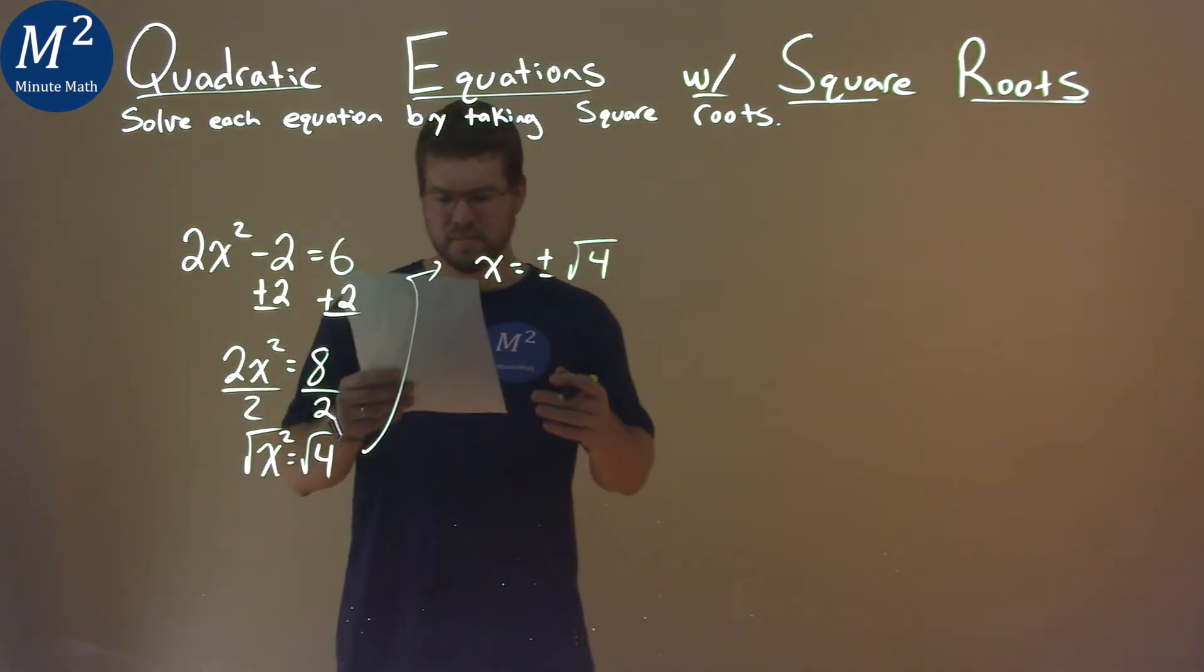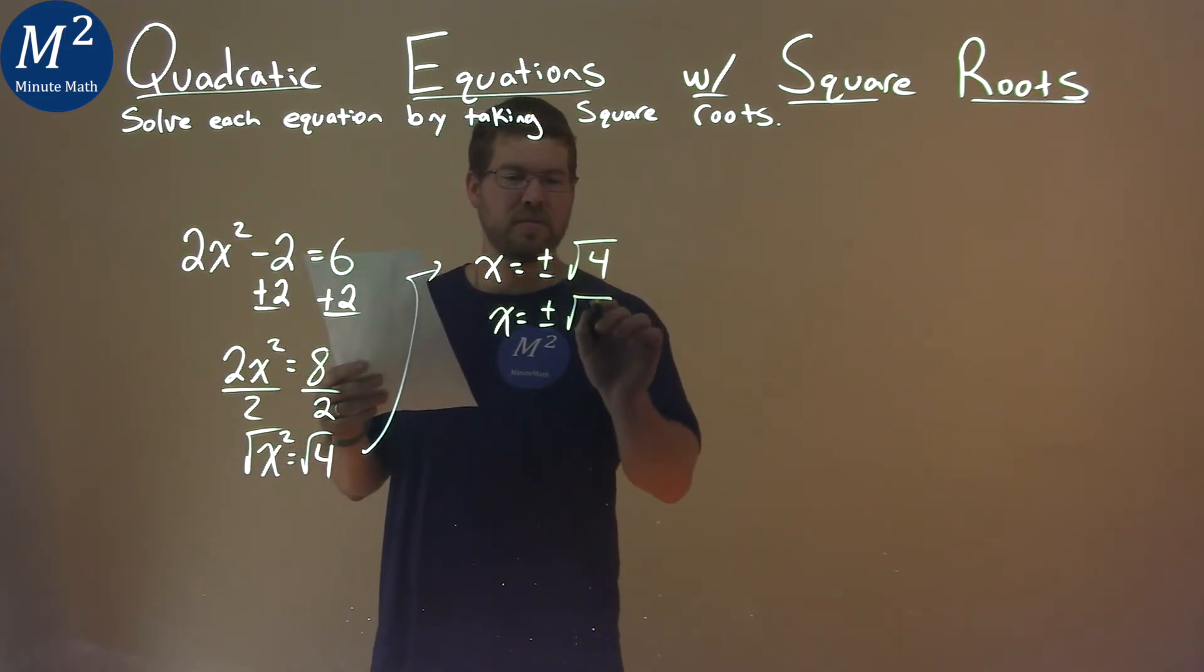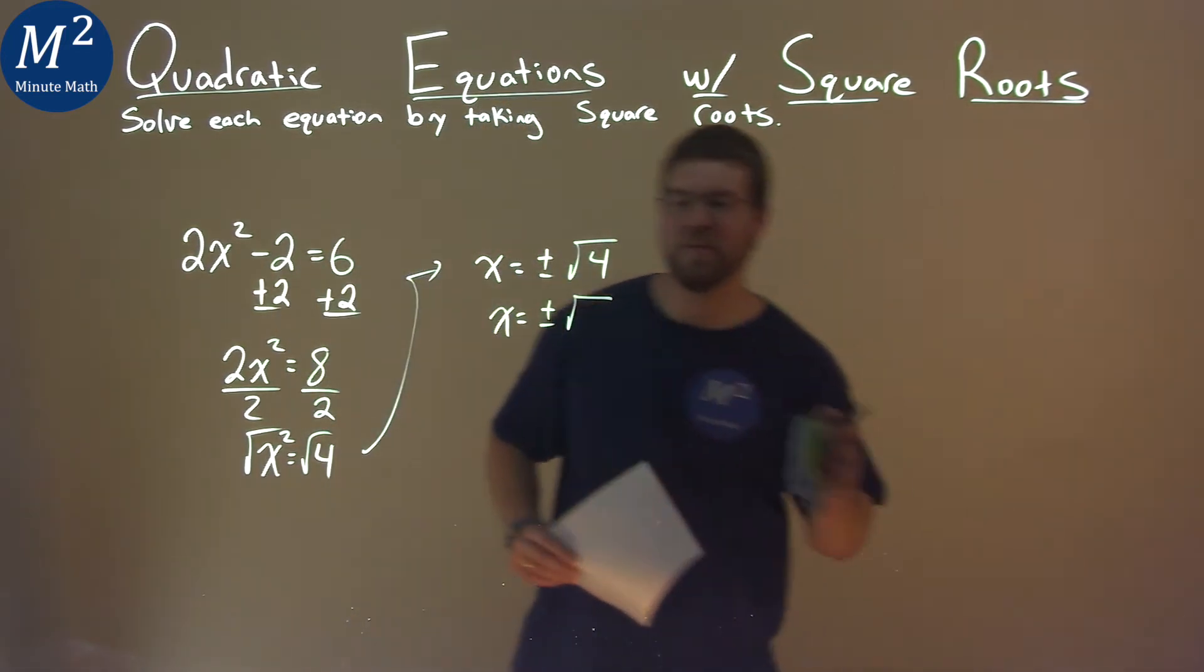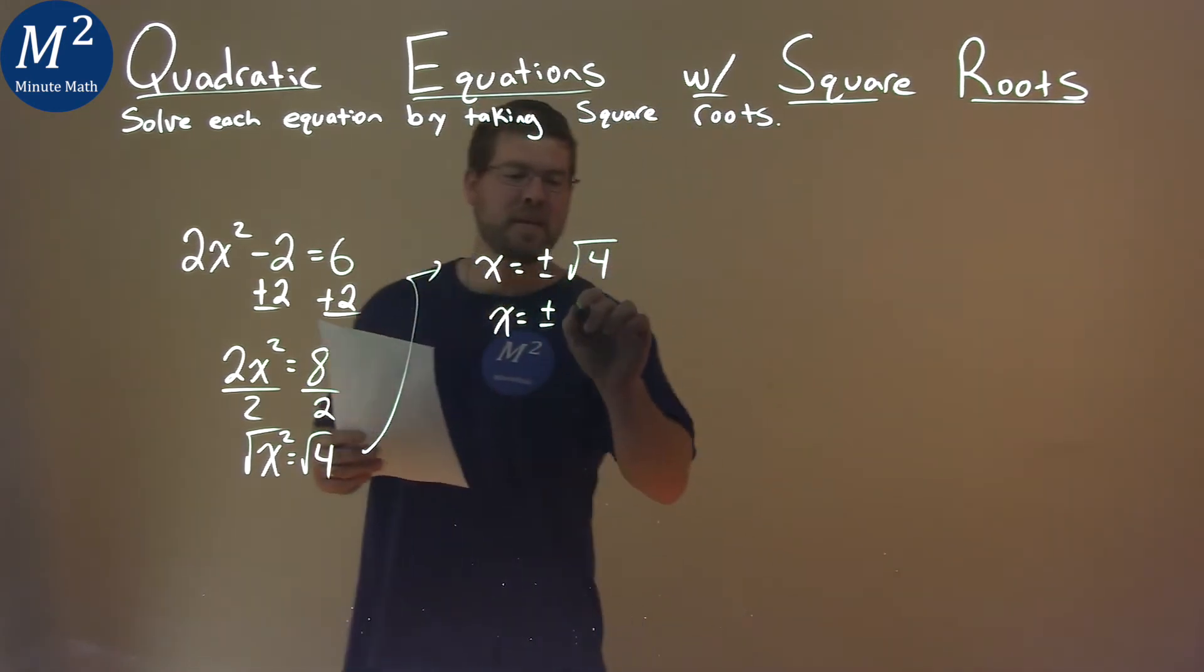So the square root of 4, that's just 2, right? So x equals plus or minus the square root, I'm sorry, not square root, just equals 2. That's square root of 2 equals 2. Come on, Sean. 2.